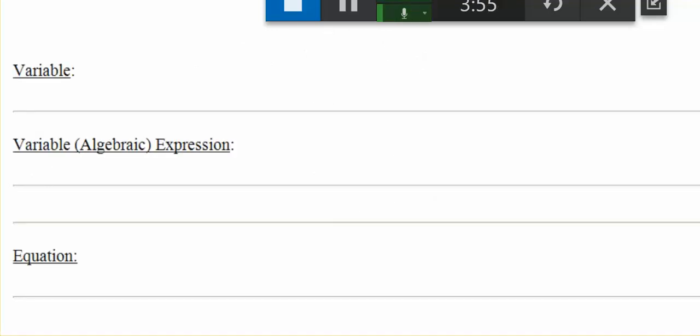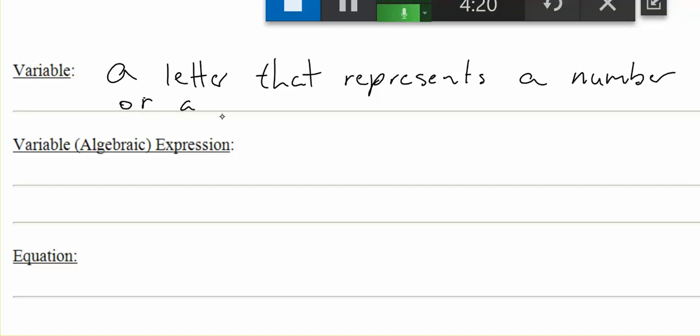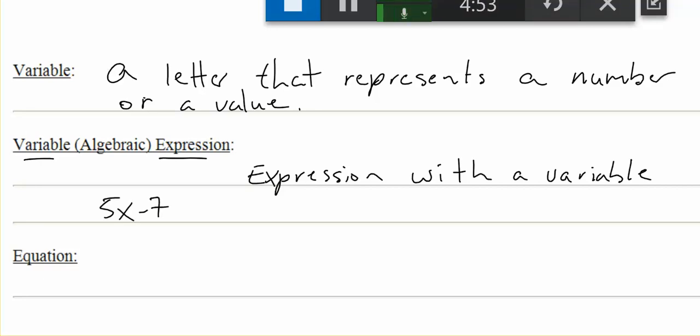Some definitions. The definition of a variable: a variable is a letter that represents a number or a value. A variable expression or an algebraic expression is just an expression with a variable. What we were just doing was evaluating expressions, so expressions with a variable. An example of that would be 5x minus 7.